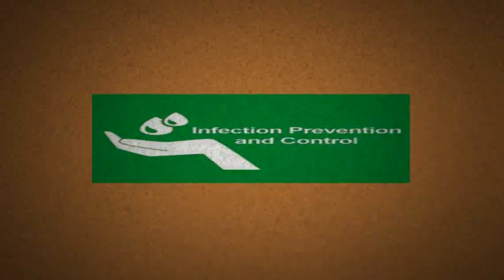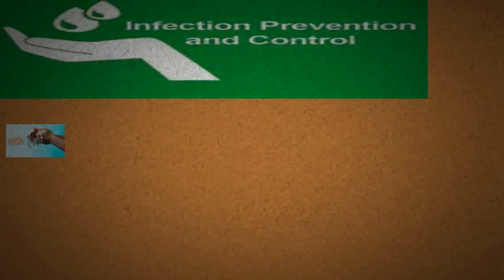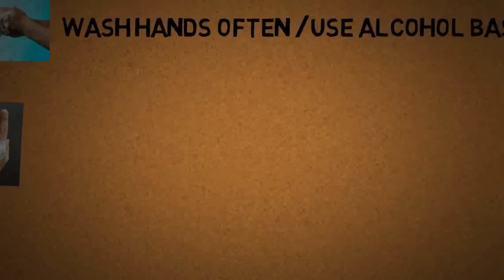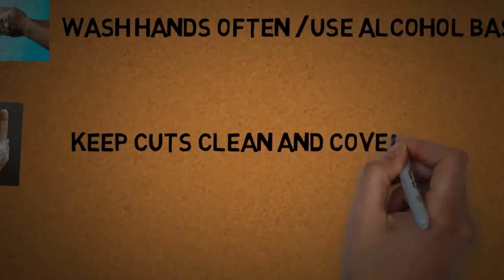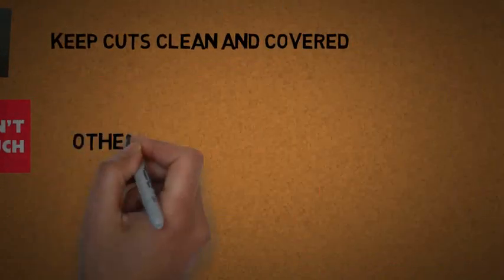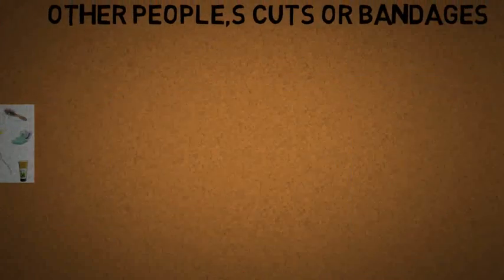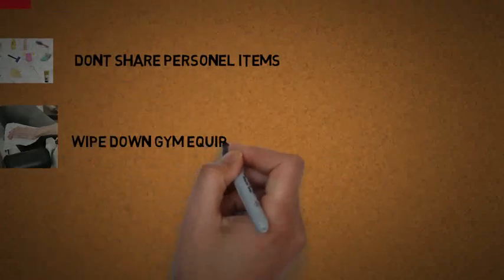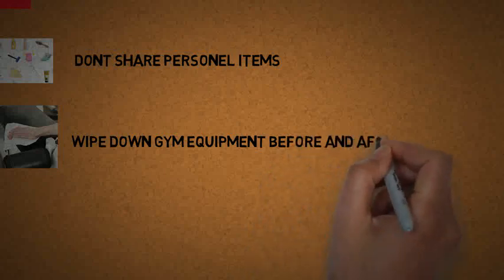Prevention and control of MRSA: First, wash hands often and use alcohol-based hand sanitizer. Keep cuts and scrapes clean and covered with bandages. Do not touch other people's cuts or bandages. Do not share personal items such as towels or razors. Wipe down gym equipment before and after use.